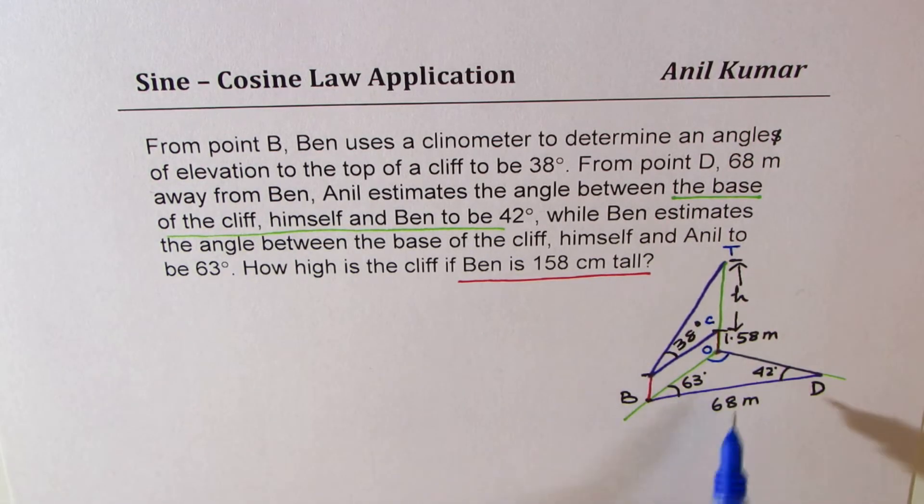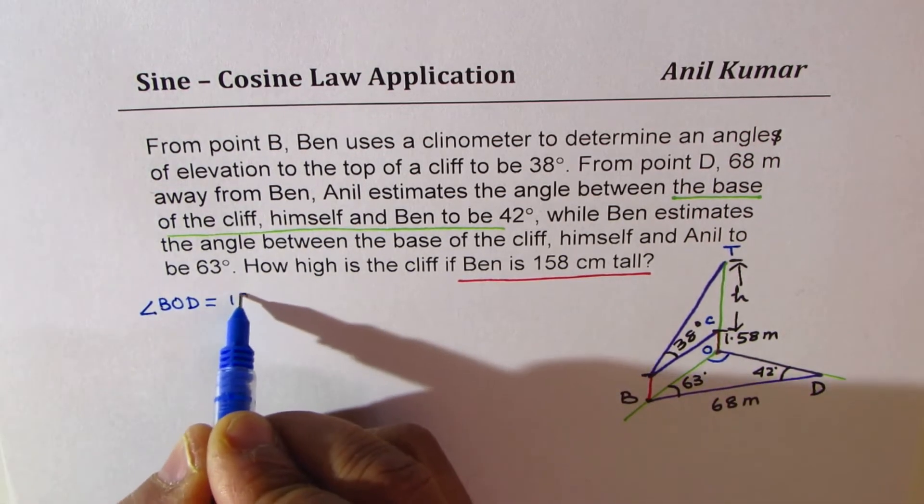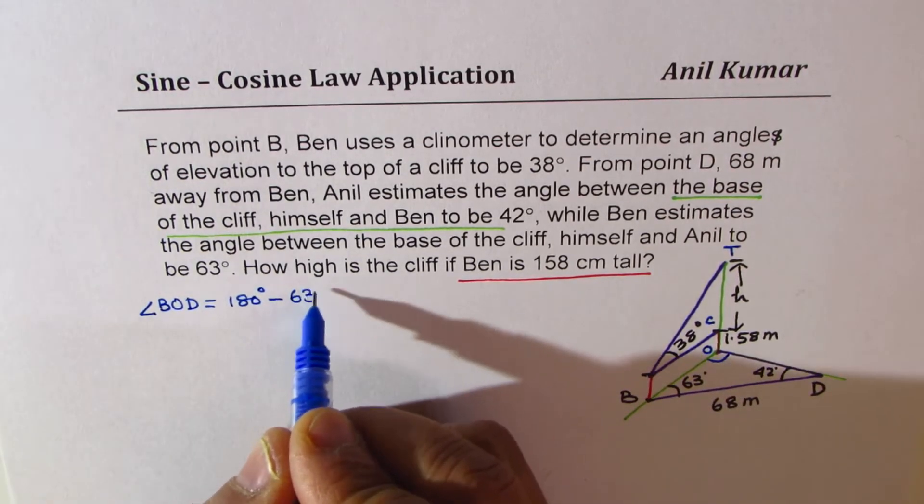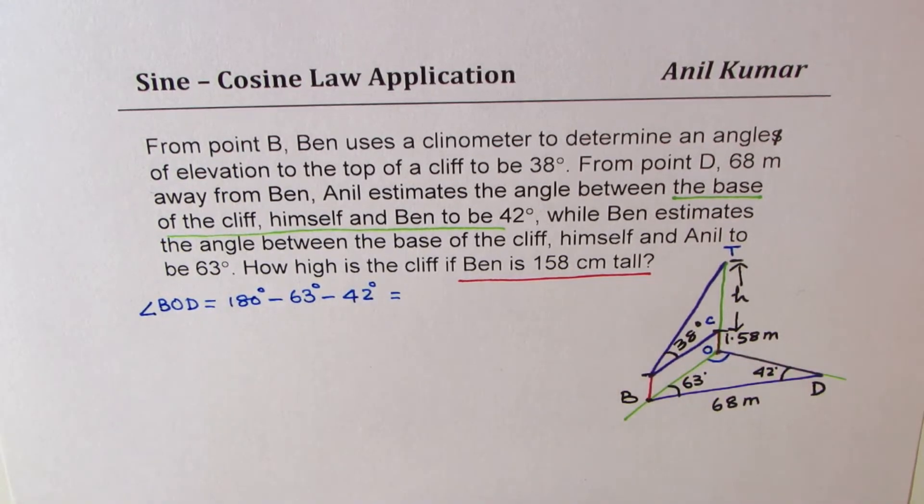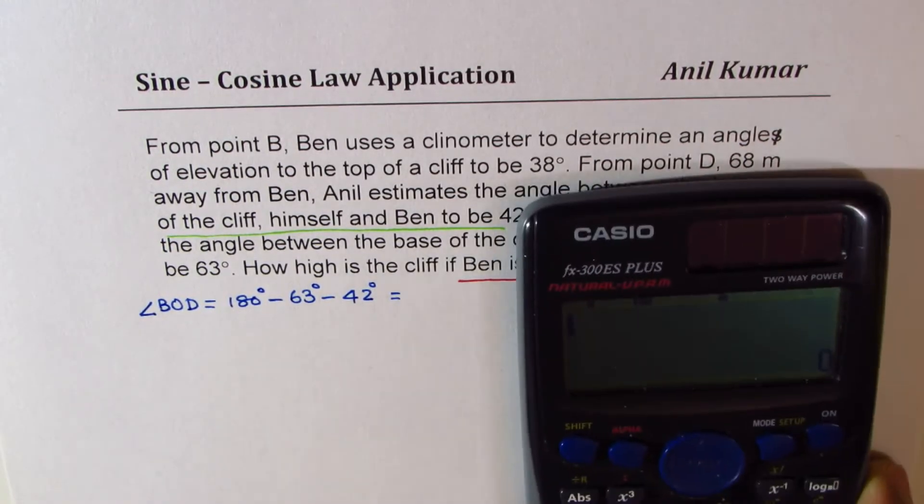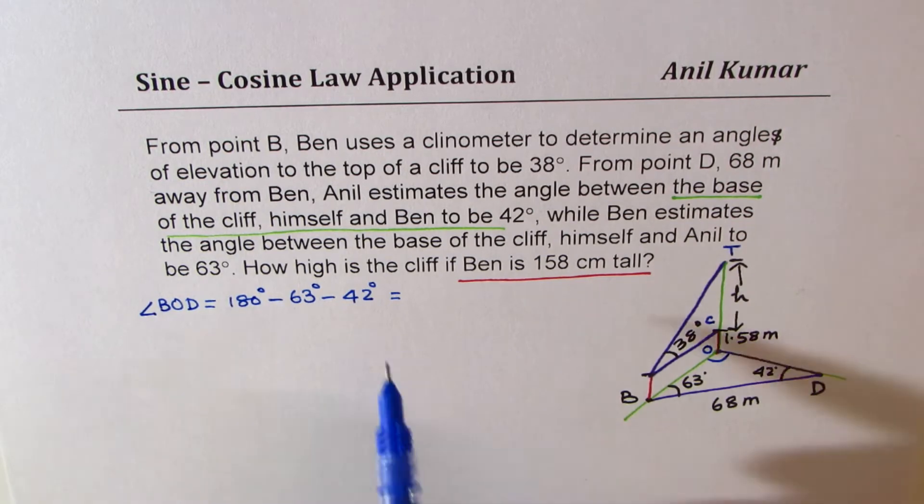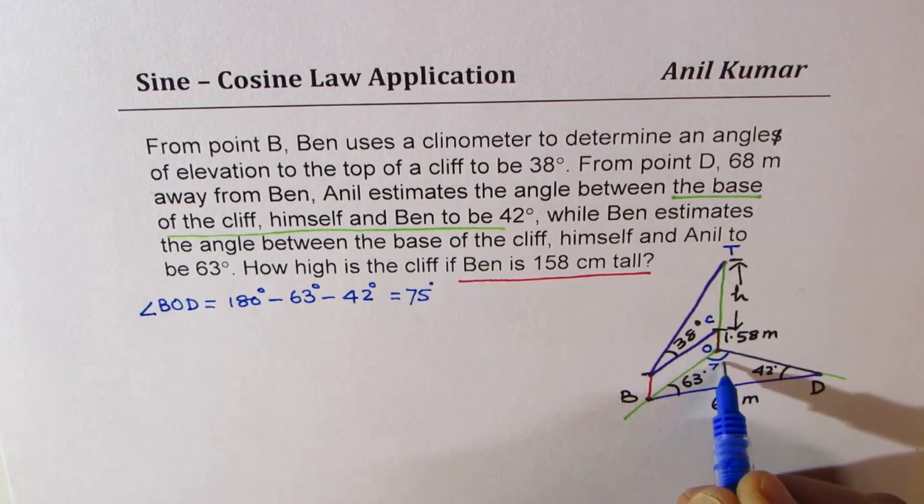So in that case, the angle BOD should be equal to 180 degrees, take away these two, 63 degrees, take away 42 degrees. So let's find this angle. 180 take away 63, take away 42. That gives us 75 degrees. So this angle is 75 degrees.